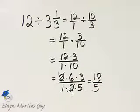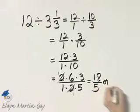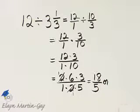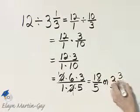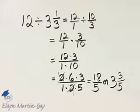18 over 5. Now since I began with mixed numbers, I'll go ahead and write this equivalently as a mixed number. 5 divides into 18 three times, 3 times 5 is 15, so the remainder is 3 and I'll write that over 5. So 18 over 5, or 3 and 3 fifths.